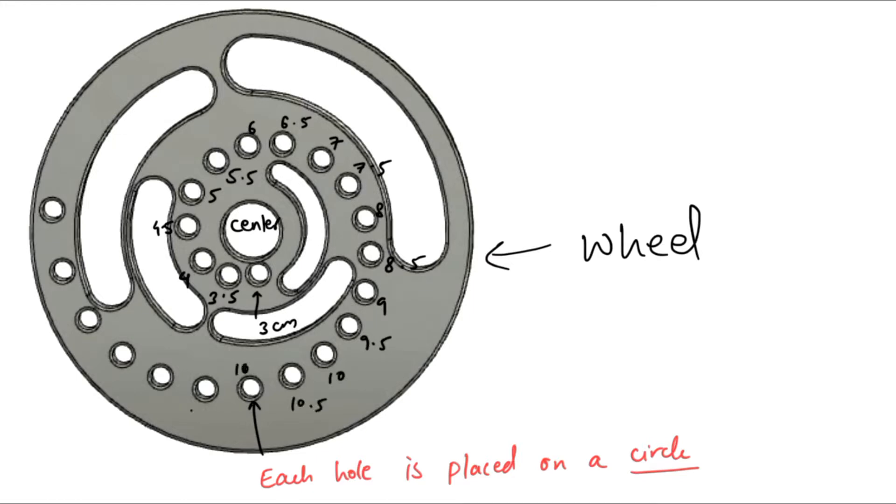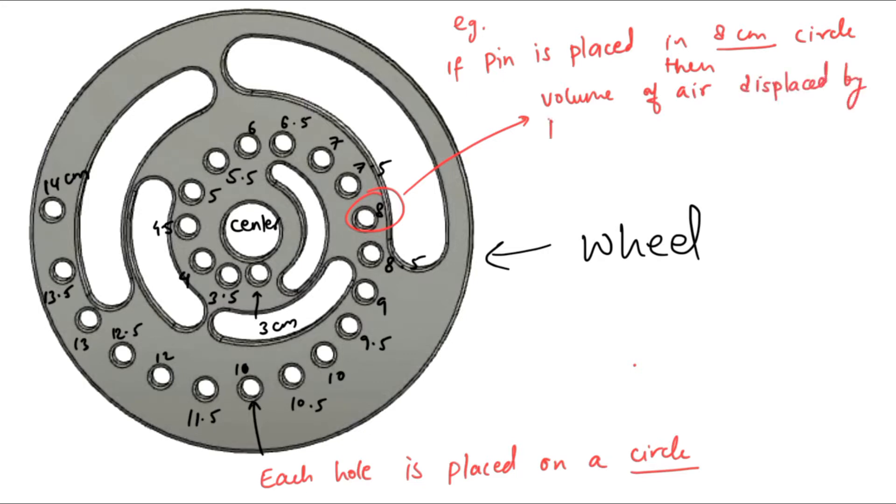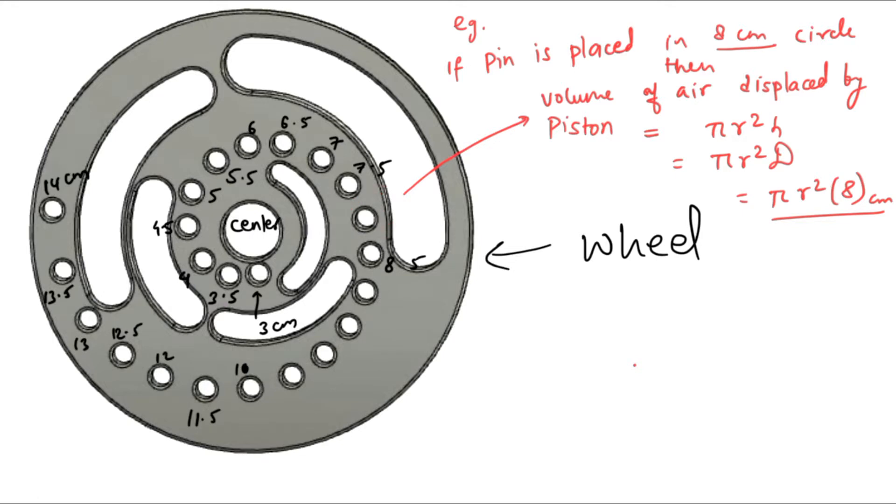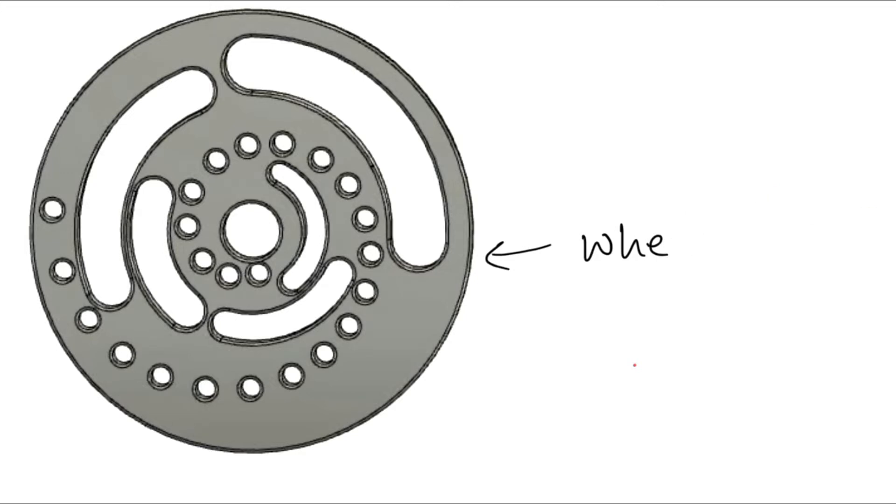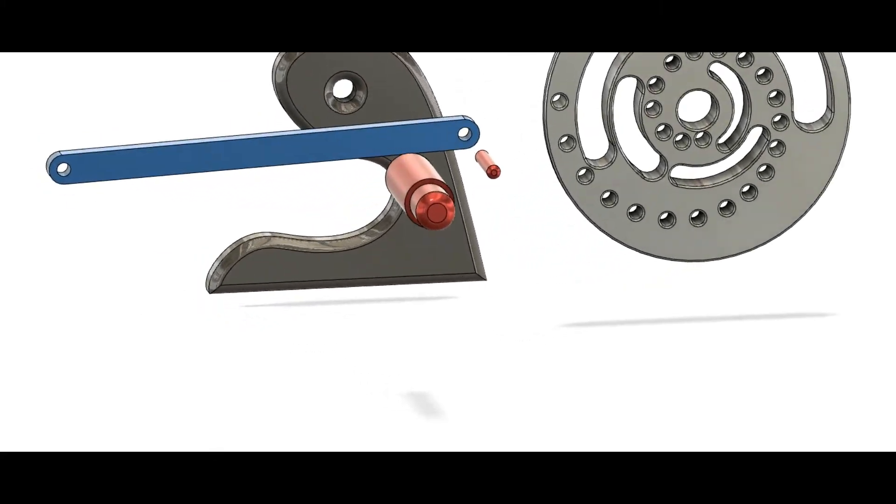We have holes placed on 3 centimeter diameter, 3.5, 4, 4.5, and so on till 14 centimeters. The hole itself measures 7 millimeters in diameter. The volume of air displaced by the piston will depend on the diameter of the circle on which the connecting rod is attached at its distal end. For example, if the connecting rod is attached on the 8 centimeter circle, then the displacement of air would be pi r squared h, where h is the diameter of the circle.